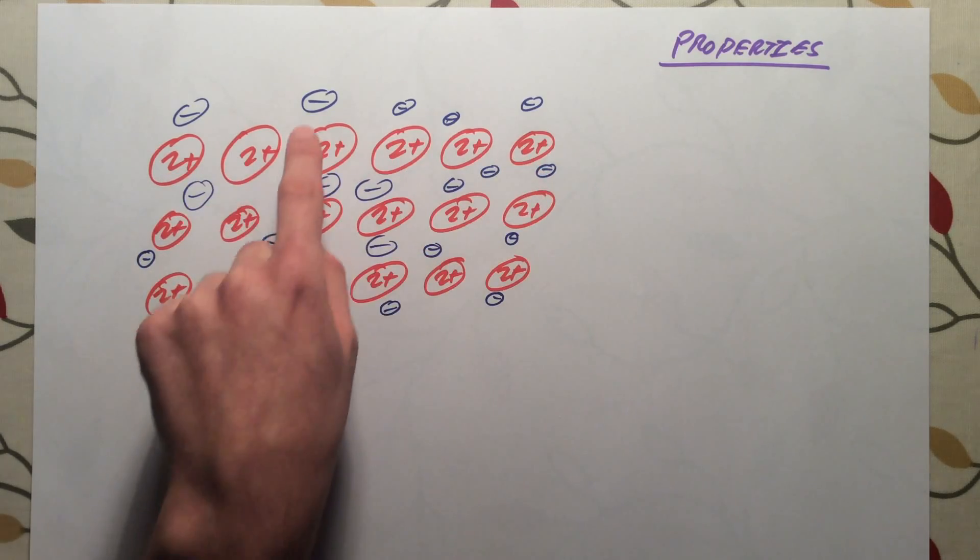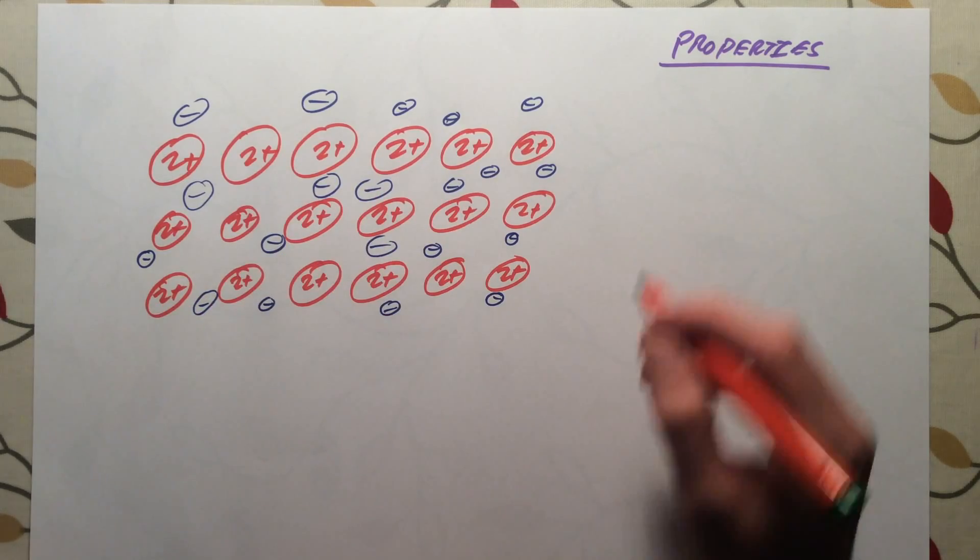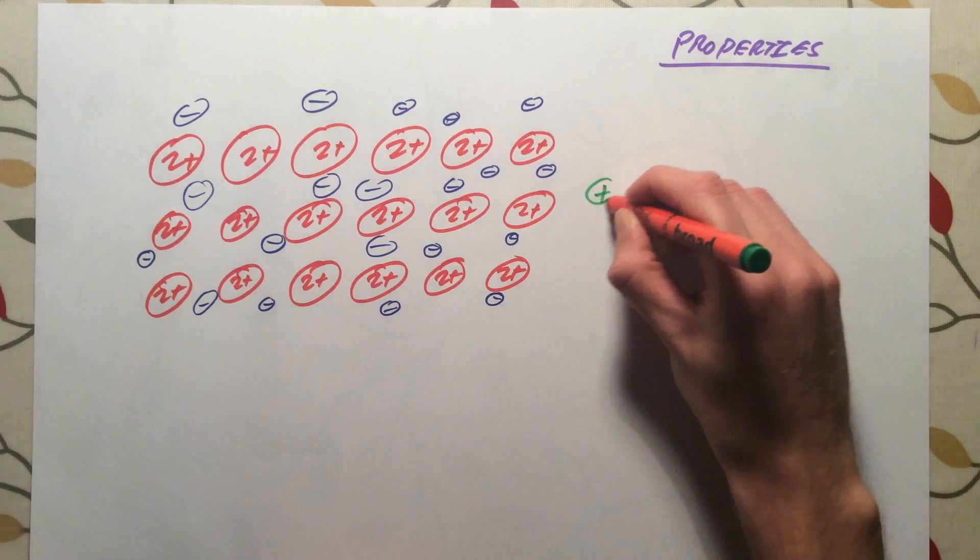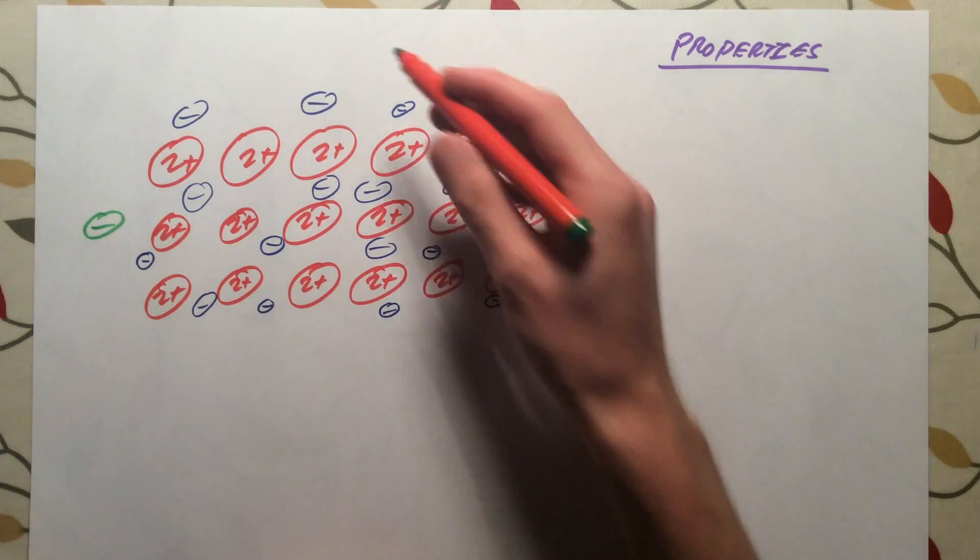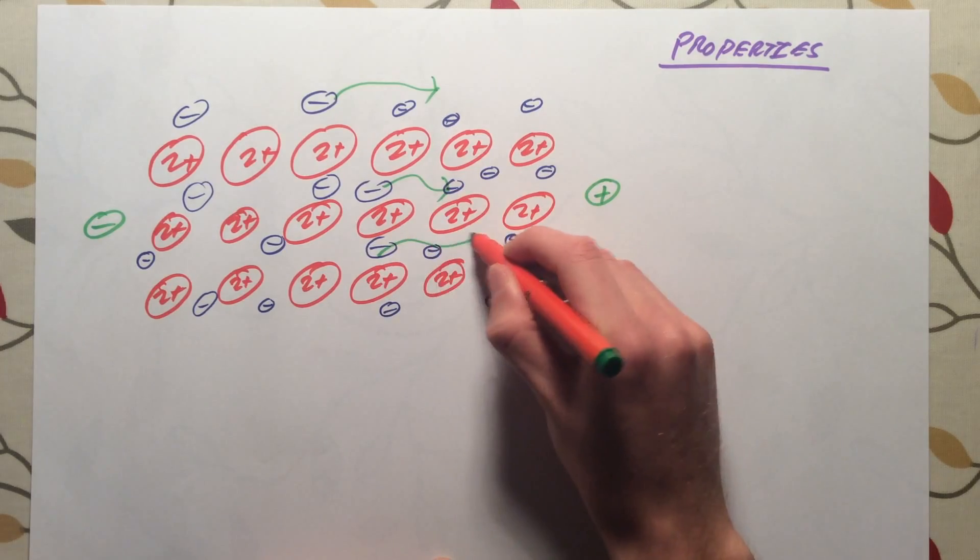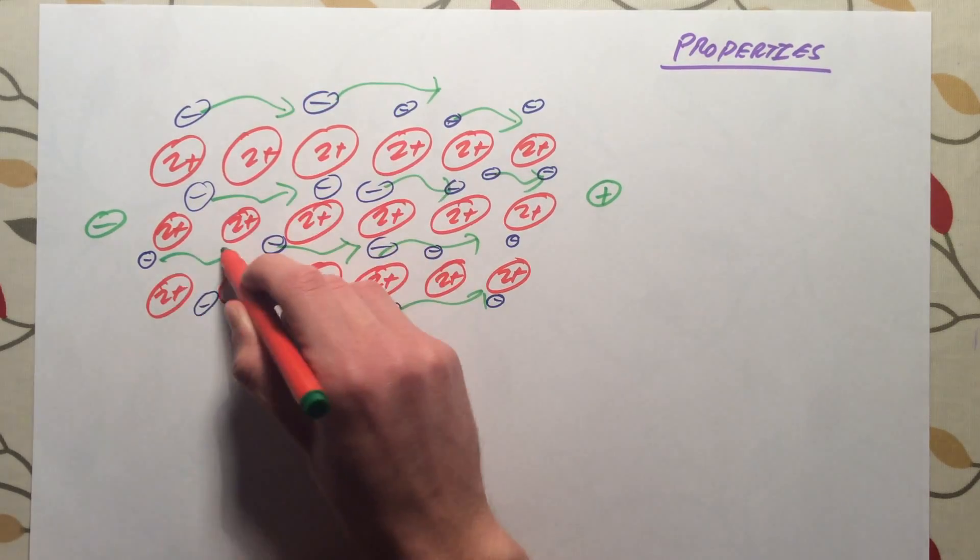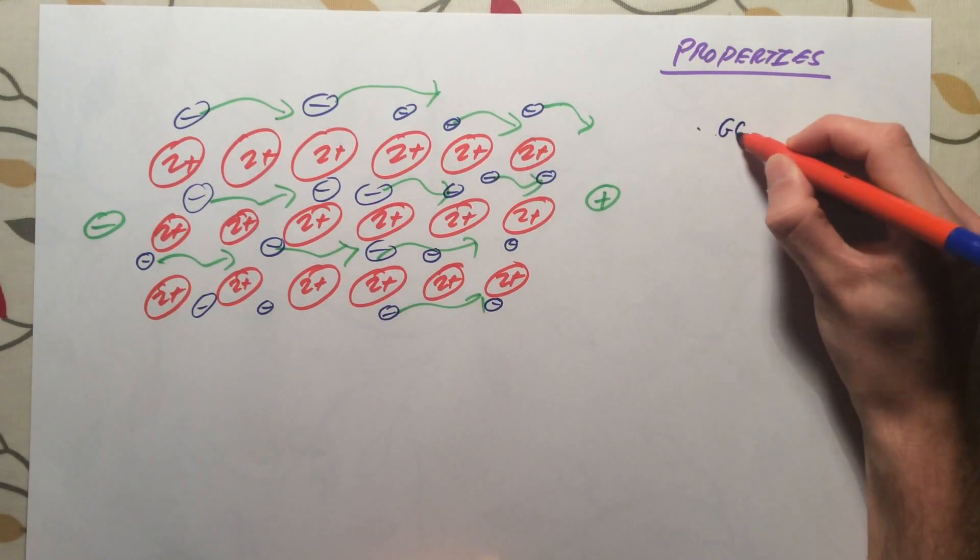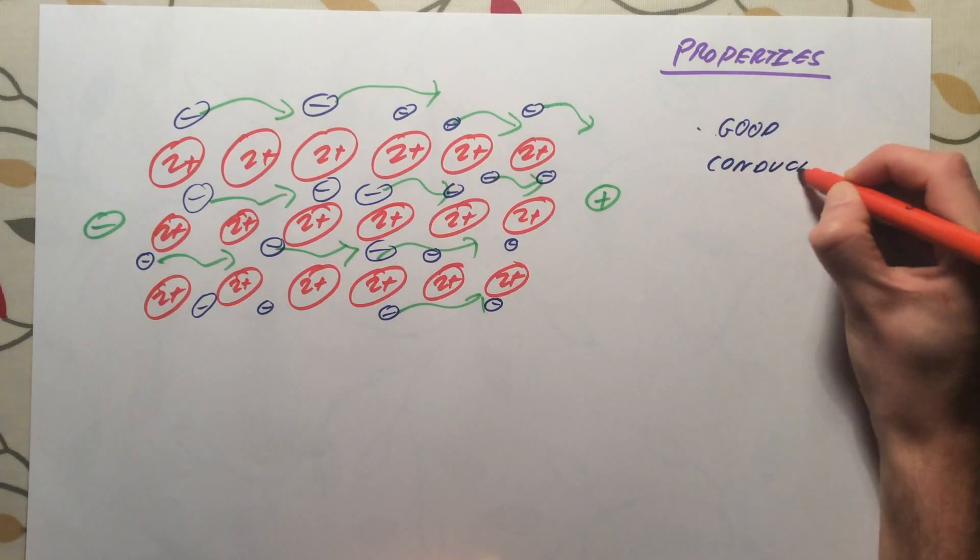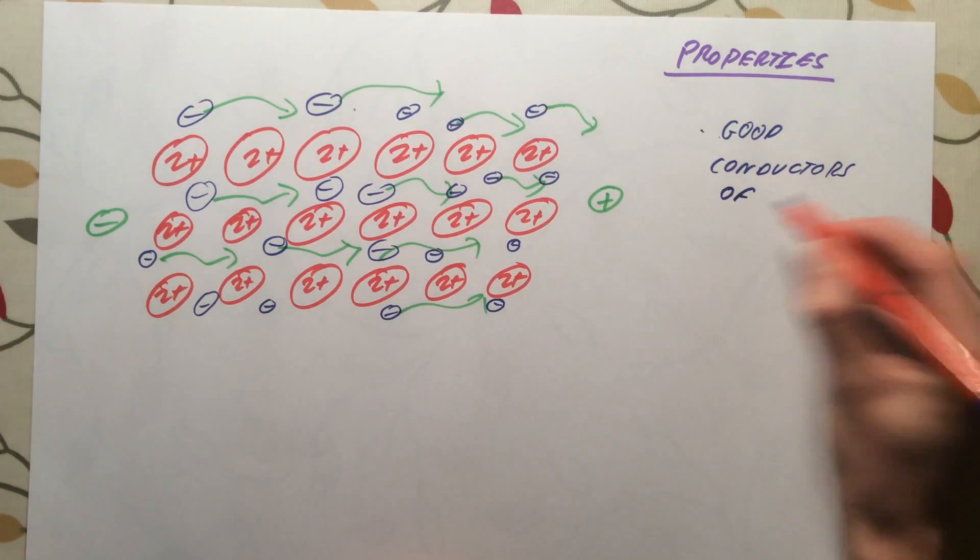The ions themselves can't move. They're fixed in place. However, these electrons, these delocalized free electrons, are able to flow wherever they want. So we already have charges that can move. Now, if I were to plug this magnesium wire into an electric circuit, and let's say we've got a direct current, so we've got a positive terminal and a negative terminal, these electrons are able to flow towards this positive side, this positive terminal. And that is what an electric current for a wire actually is. It is electrons or negative charges flowing towards a positive terminal. Therefore, all metals are good conductors of electricity.